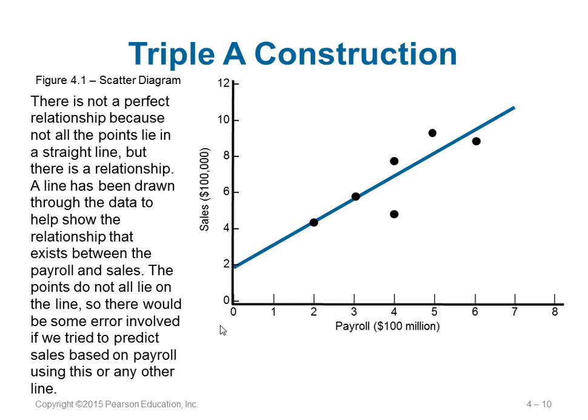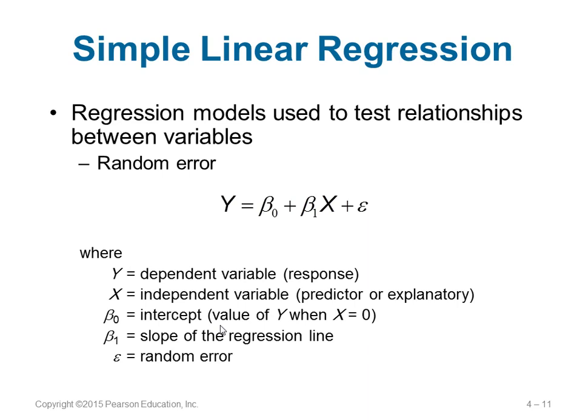We put the data points and try to fit them with a straight line, but the line does not meet all the points — not all points lie on the straight line. This means there is no direct linear exact relationship. So if you try to predict sales based on payroll using this line, you will have a little bit of error — there is a chance of some error.